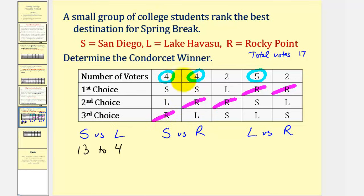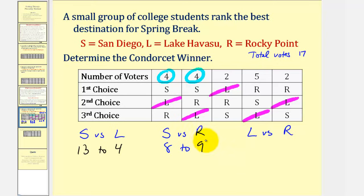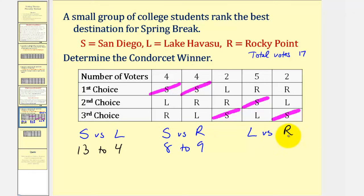Next, we compare San Diego to Rocky Point, ignoring Lake Havasu. San Diego beats Rocky Point in two columns, but Rocky Point wins in three columns. Therefore San Diego versus Rocky Point is eight to nine — Rocky Point wins this one-to-one comparison. Finally, for Lake Havasu versus Rocky Point, ignoring San Diego, Lake Havasu is preferred in two columns, giving a result of six to eleven — Rocky Point wins. Looking at all comparisons, Rocky Point beats Lake Havasu and Rocky Point beats San Diego, so Rocky Point always wins in a one-to-one comparison. Therefore, Rocky Point is the Condorcet winner.